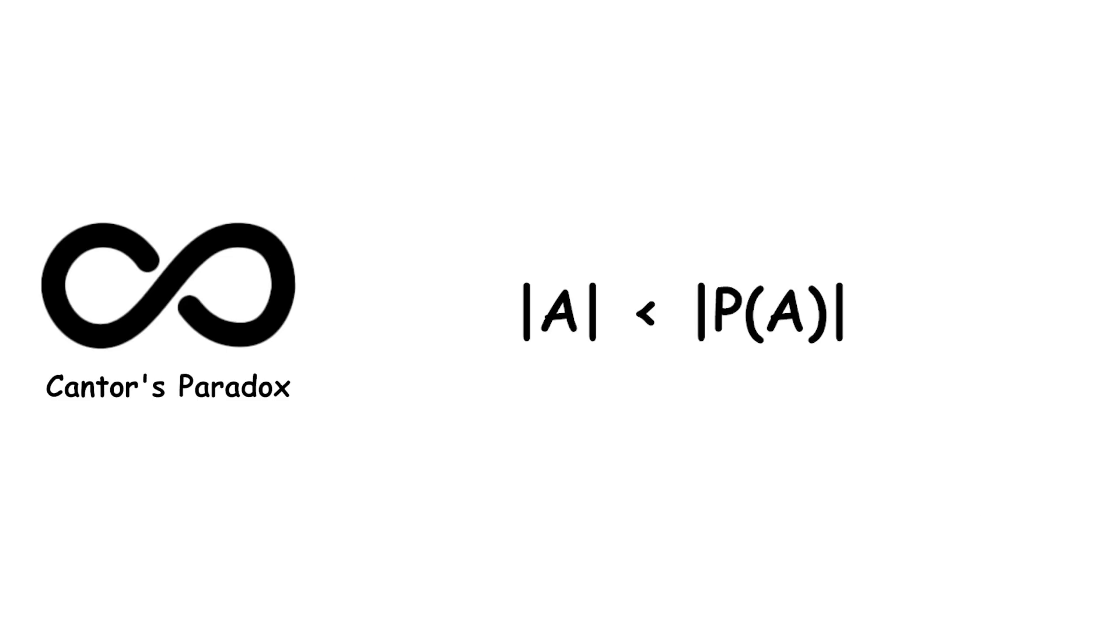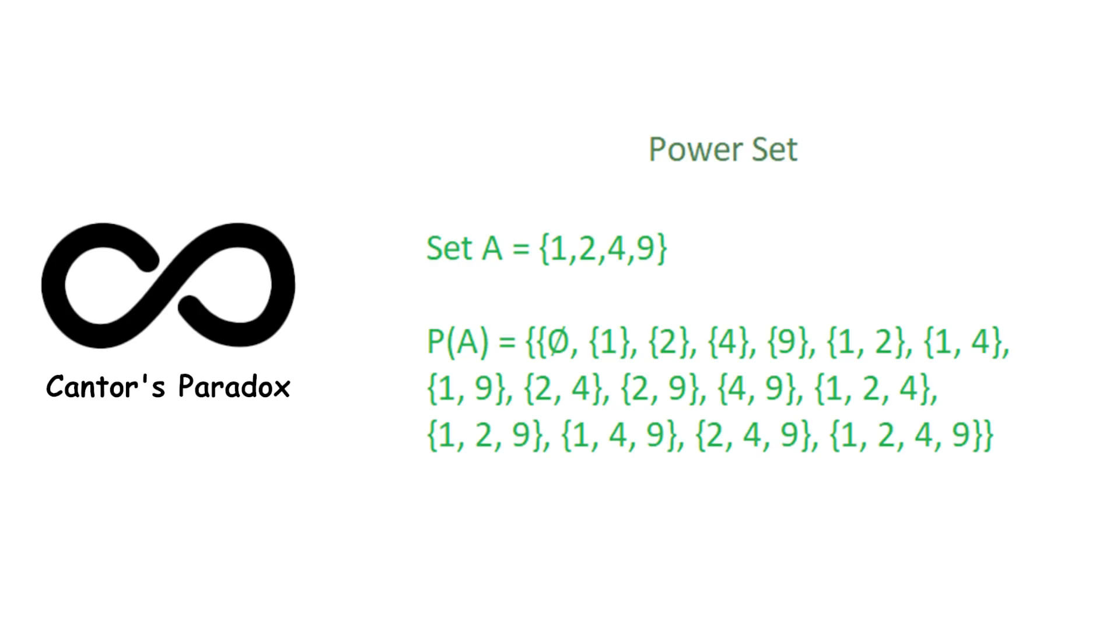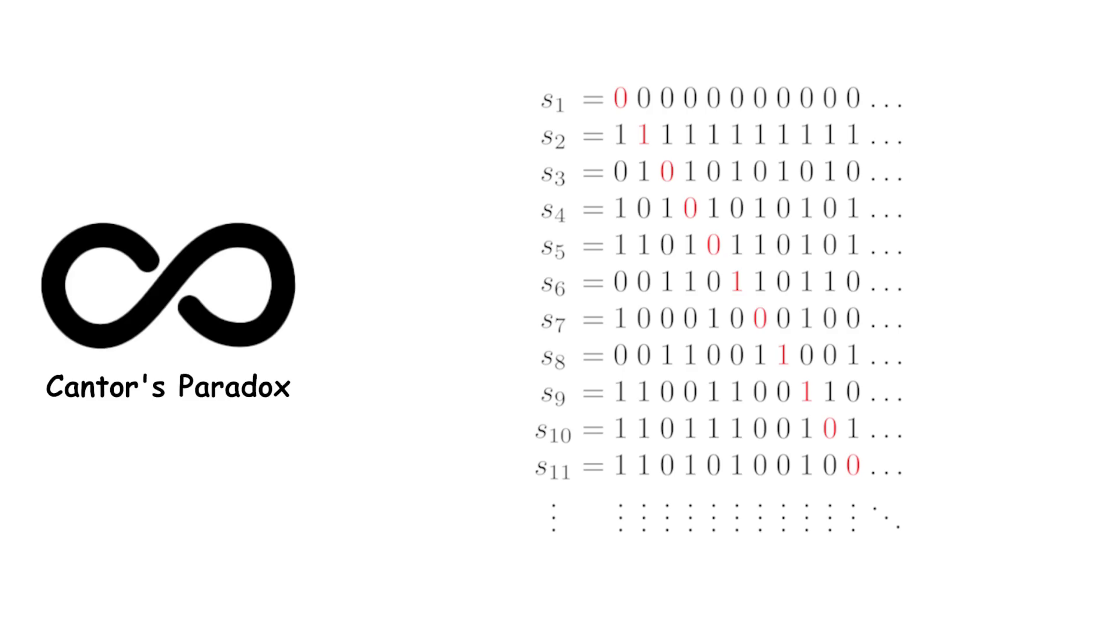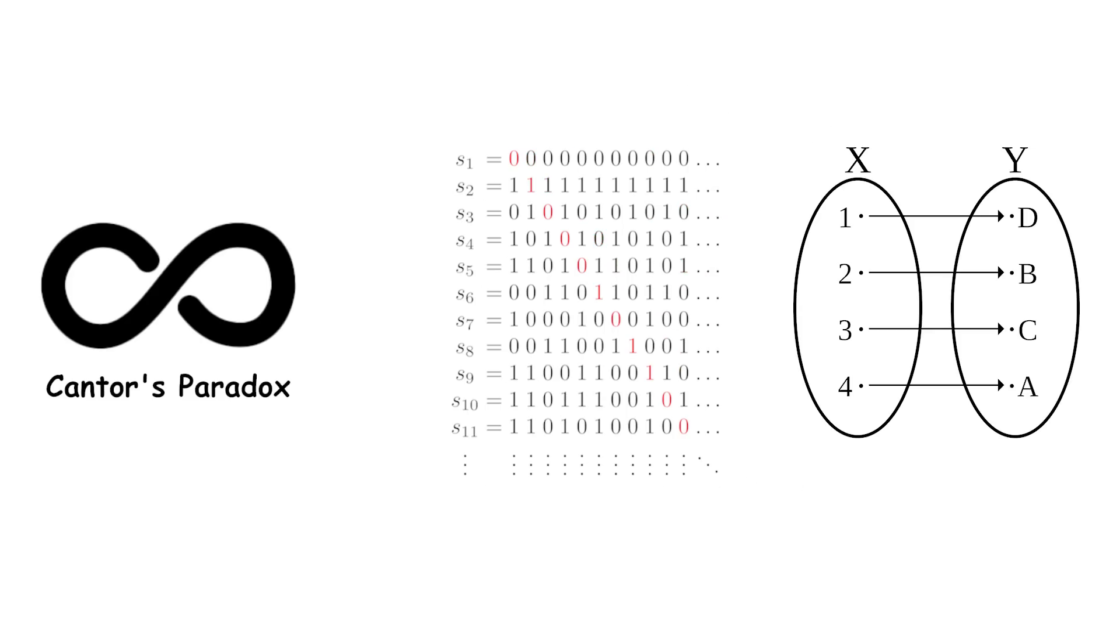The power set, P of A, is a set of all subsets of A. To show that the size of A is less than the size of the power set of A, Cantor used a diagonal argument which proves that there cannot be a bijection, a one-to-one correspondence, between A and P of A.